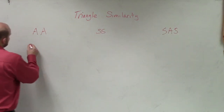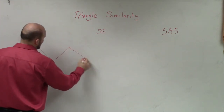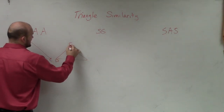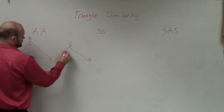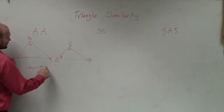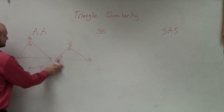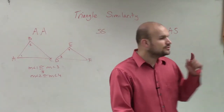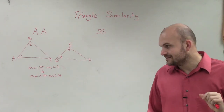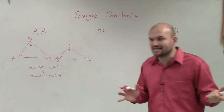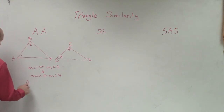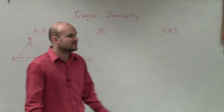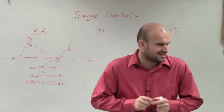For angle-angle, all we need to do is show that two angles are congruent. So let's say we have triangle ABC and DEF. If the measure of angle one is congruent to the measure of angle three, and the measure of angle two is congruent to the measure of angle four — if you can determine that two triangles have exactly the same two corresponding angle measures — then you can say that triangle ABC is similar to triangle DEF. That's all you need. It's much easier than congruency — you just have to find two angles.